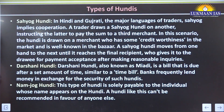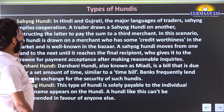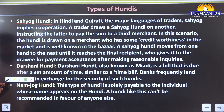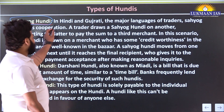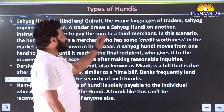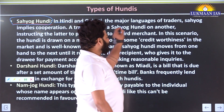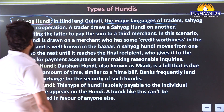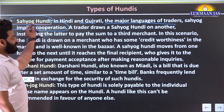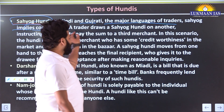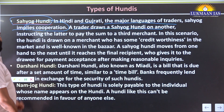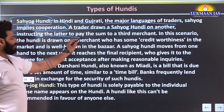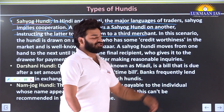There are different types of Hundis. The first is Sahyog Hundi - in Hindi and Gujarati, the major languages of traders, 'Sahyog' implies cooperation. A trader draws a Sahyog Hundi on another, instructing the latter to pay the sum to a third merchant.